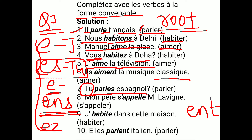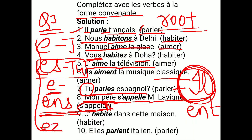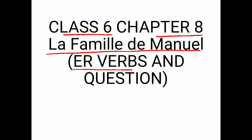The eighth one: MON PÈRE dash MONSIEUR LAVENIA, bracket S'APPELER. MON PÈRE is masculine singular, so we use IL. Remove ER → radical, add E → IL S'APPELLE. MON PÈRE S'APPELLE MONSIEUR LAVENIA — my father's name is Monsieur Lavenia. Also: IL HABITE DANS MA MAISON — he lives in my house. And: ILS PARLENT ITALIEN — they speak Italian. I hope the topic of ER verbs was clear to you. If you have any doubt, ask me in the comment section. Bye bye and thanks for watching.